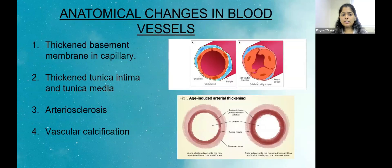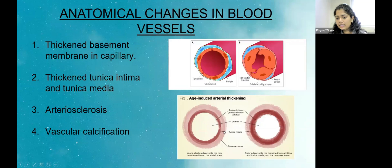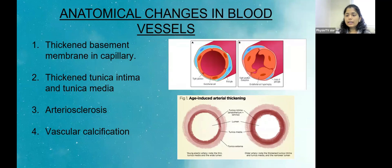Changes occurring in blood vessels include a thickened basement membrane in capillaries. As we can see in the figures, in A the basement membrane is of normal thickness and in B it has thickened considerably, causing stenosis of the vessel. There is also thickening of the tunica intima and tunica media — the innermost and middle layers of the arteries. Additionally, arteriosclerosis, which is hardening of the arteries, and vascular calcification occur with aging.